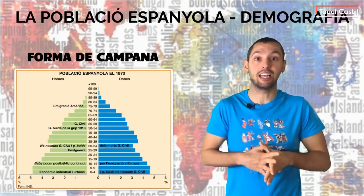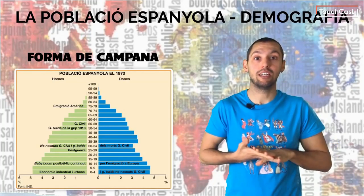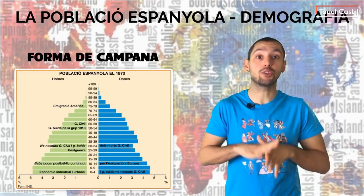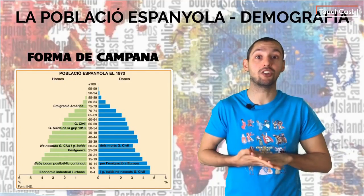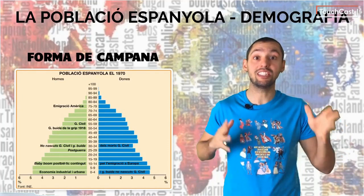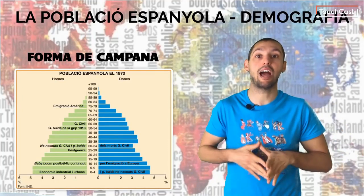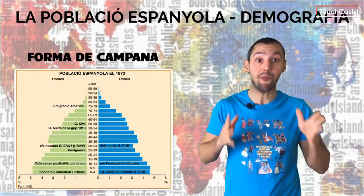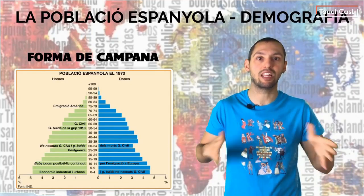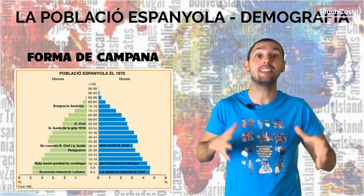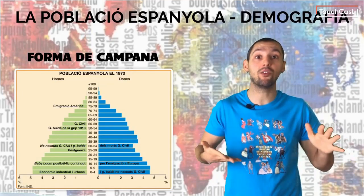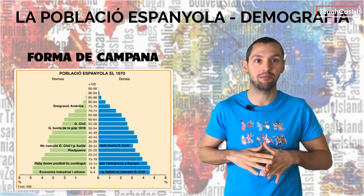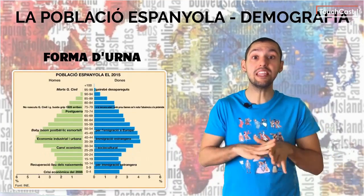En relació amb una economia endarrerida, l'atur era molt elevat i la migració quasi forçosa. La forma de campana es correspon amb l'Espanya dels 70, indicant una població adulta, ja amb una base moderada, atès que la natalitat s'ha anat retallant, però el relleu generacional encara està garantit. La població disminueix lentament cap al cim a causa d'unes taxes de mortalitat baixes i el percentatge de la població és moderat. S'han d'assenyalar les causes de la disminució de la natalitat i la baixa mortalitat.